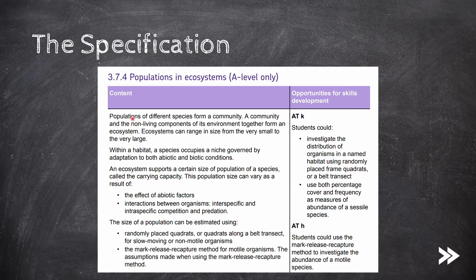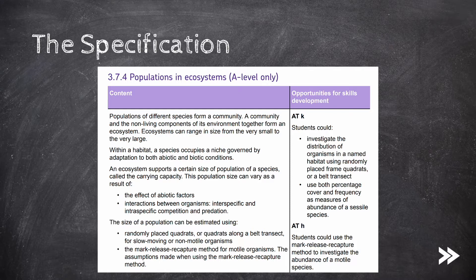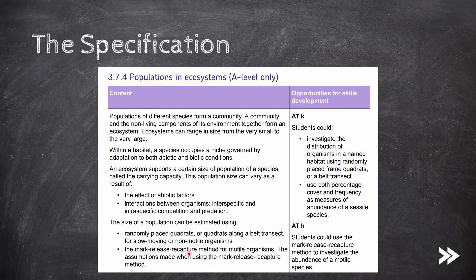We should know that populations of different species form a community, and that a community and the non-living components of its environment together form an ecosystem. Ecosystems can range in size from the very small to the very large. Within a habitat, a species occupies a niche governed by adaptation to both abiotic and biotic conditions. We then need to know about the carrying capacity and how it is dictated by abiotic factors, interactions between organisms — including inter-specific and intra-specific competition and predation — and how to estimate population size using randomly placed quadrats or quadrats along a belt transect for slow-moving or non-motile organisms, or the mark-release-recapture method for motile organisms.